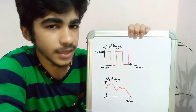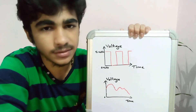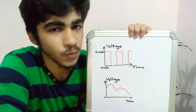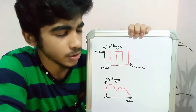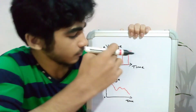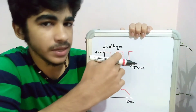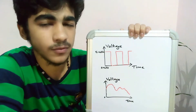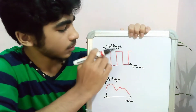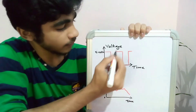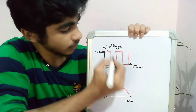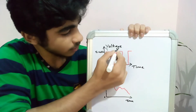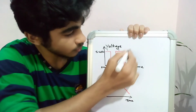We earlier learned that these 5 volts and 0 volts can be represented using binary numbers, 1s and 0s. So 5 volts will be a binary 1 and 0 volts will be a binary 0. So here we have a binary 1, here we have a binary 0, here we have a 1, 0.